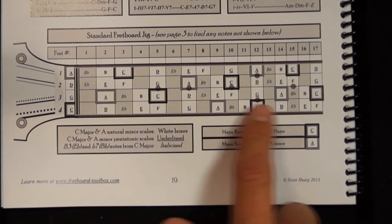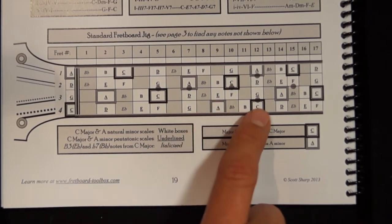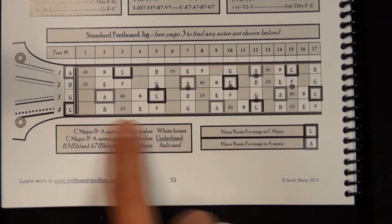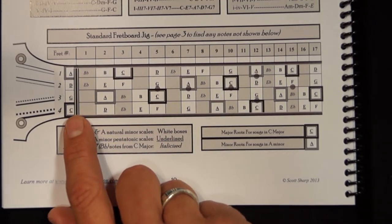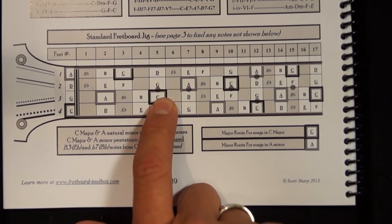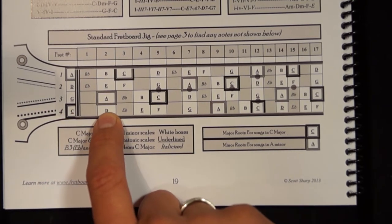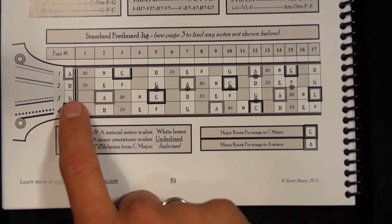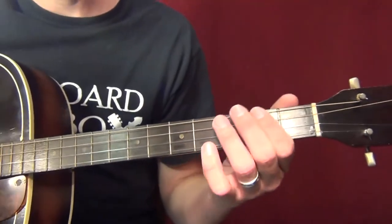The notes of the C major scale going up are C, D, E, F, G, A, B, C. You can see the fret numbers that correspond with each of those notes, and those notes repeat all up and down the fretboard. To play a C major scale from one C to the next, I play an open C on the fourth string, D on the second fret, E on the fourth fret, F on the fifth fret, open G on the third string, A, B, C.